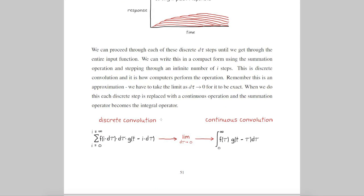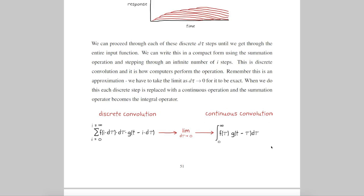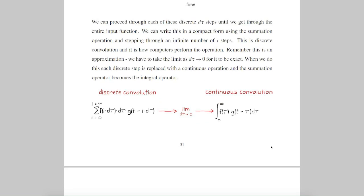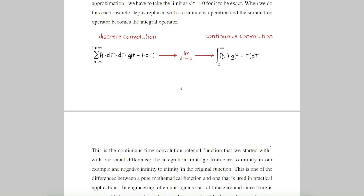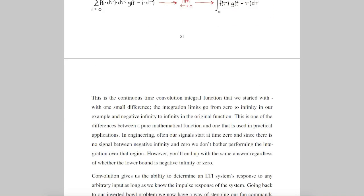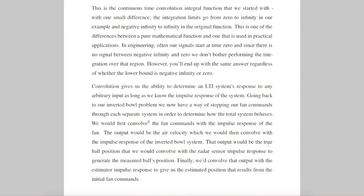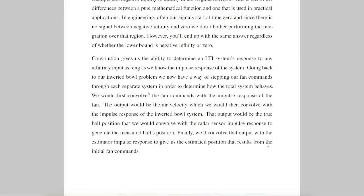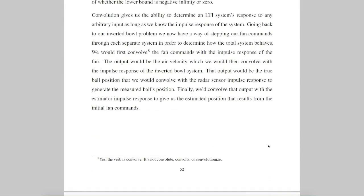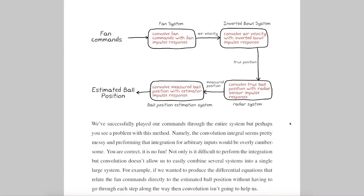However, all we have to do is shrink d-tau down by taking the limit as it goes to zero, and we're left with an integral — the convolution integral. So when you're flipping an impulse response and sliding it across an arbitrary input f(t) and then summing it all together, you're really performing an infinite number of steps that we just laid out. It's pretty awesome.